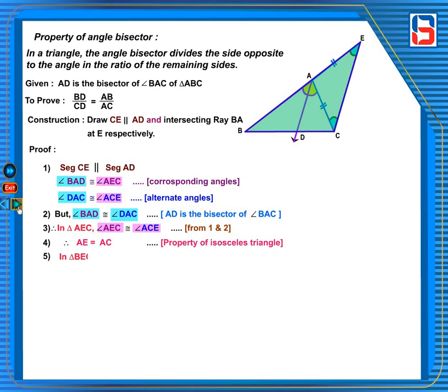In triangle BAC, segment AD parallel to segment CE by construction, therefore BD upon DC is equal to BA upon AE, by Basic Proportionality Theorem.